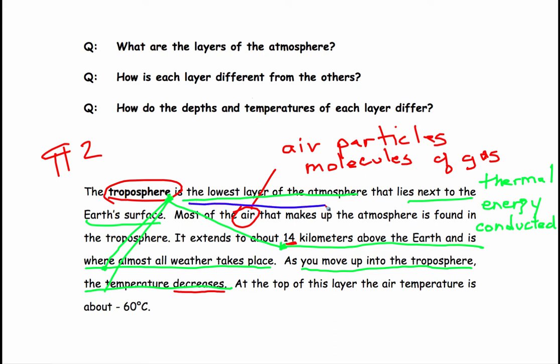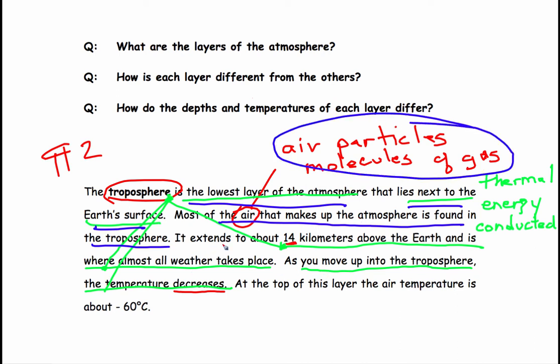Pretty much all of the descriptions are your key ideas. It's the lowest layer of the atmosphere. It lies right next to the Earth's surface. Most of the air that makes up the atmosphere is found in the troposphere. It extends to about 14 kilometers above the Earth. It's where all weather takes place.